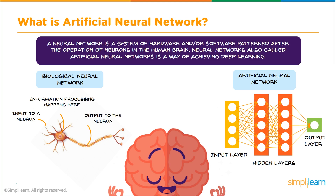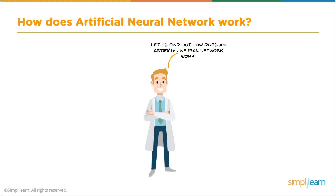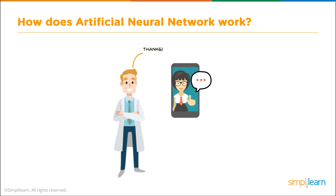A neural network is a system of hardware and/or software patterned after the operation of neurons in the human brain. Neural networks, also called artificial neural networks, are a way of achieving deep learning. Let's find out how an artificial neural network works. Hey Siri, what is the time now? It's 12:30 in the morning. Let's find out how she recognizes speech.